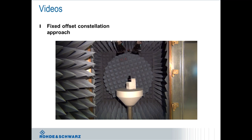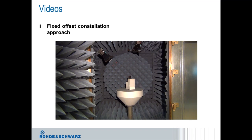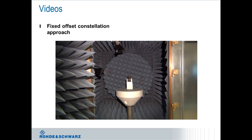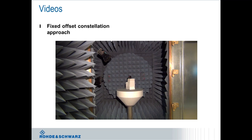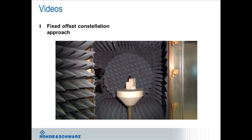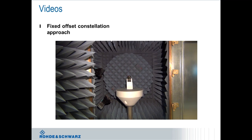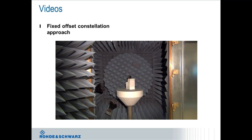The other approach uses a fixed offset between the two antennas. Instead of having both antennas move independently from each other, the fixed offset approach is set up so that the second antenna is moved at a constant offset from the first one. The device under test is moving in phi, but the test antennas are moving from top to bottom with a fixed offset — in this case, 30 degrees from each other.